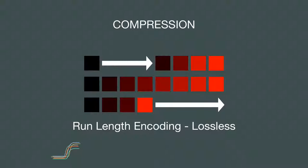Another strategy for lossless compression is to notice that all pixels in an image are shades of red with no green or blue components, so green and blue channel values don't need to be stored. This is another form of lossless compression for that particular image.